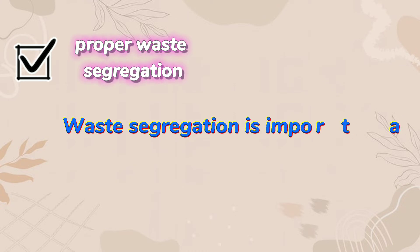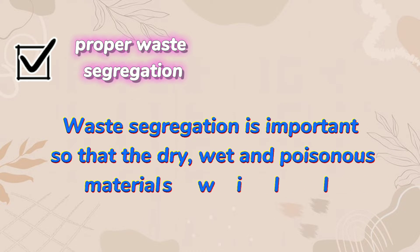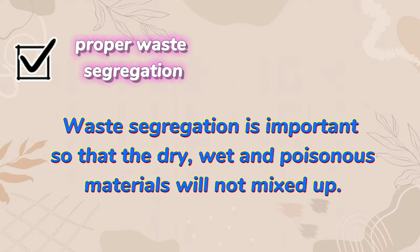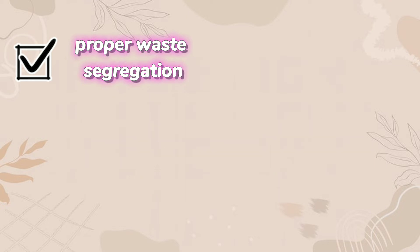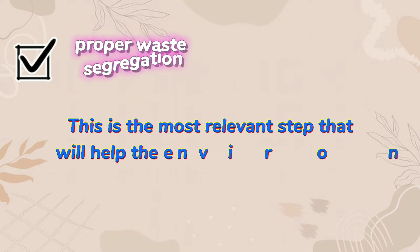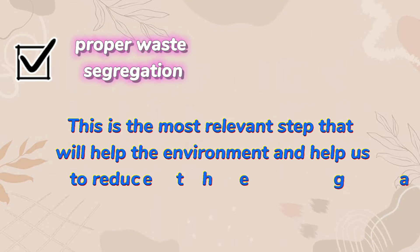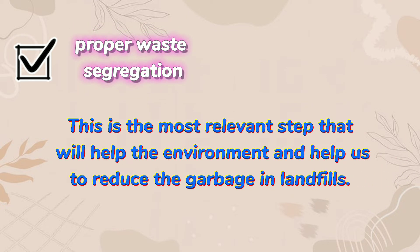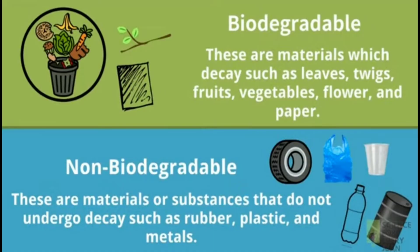Waste segregation is important so that dry, wet, and poisonous materials will not mix up. This is the most relevant step that will help the environment and help us to reduce the garbage in landfills. By segregating our waste, we have two categories: biodegradable — these are materials which decay, such as leaves, twigs,